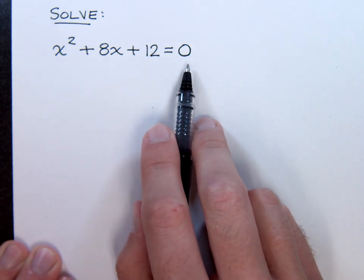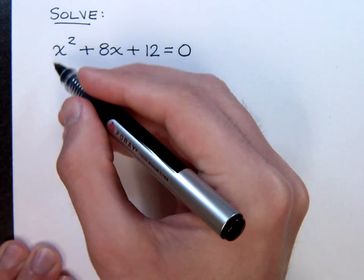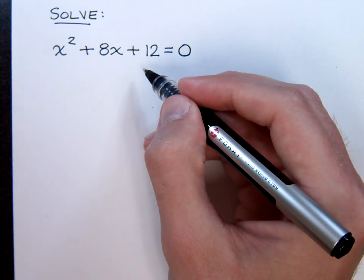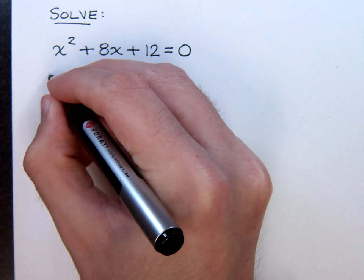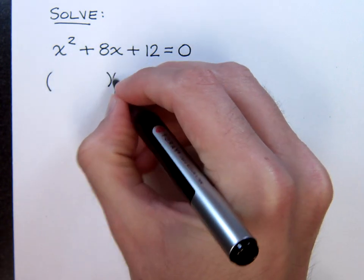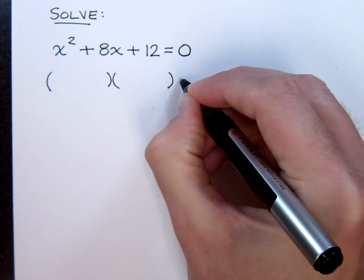So what we need to do now is just factor. Since this is a trinomial and there is no common factor other than one, we just go straight to the two sets of parentheses to put our binomial factors in here.